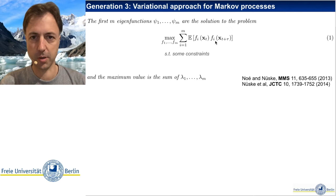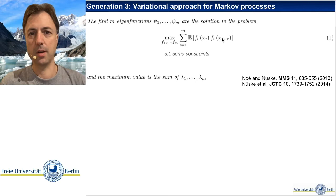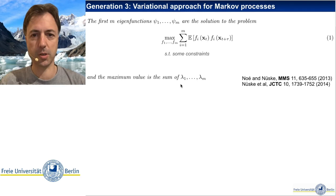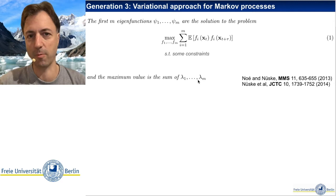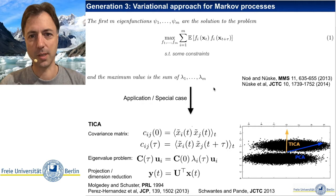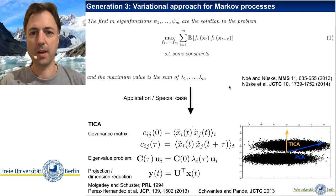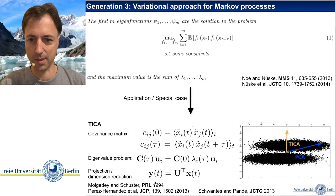We start with some ansatz functions, compute their time-autocorrelation function from the simulation trajectory data, and maximize them subject to some constraints. The maximum value of this sum equals the sum of the corresponding eigenvalues of the dynamical propagator. If we model the eigenfunctions as a linear superposition of basis functions, this becomes a linear algebra problem — and it corresponds to TICA, Time-lagged Independent Component Analysis, known since at least 1994.